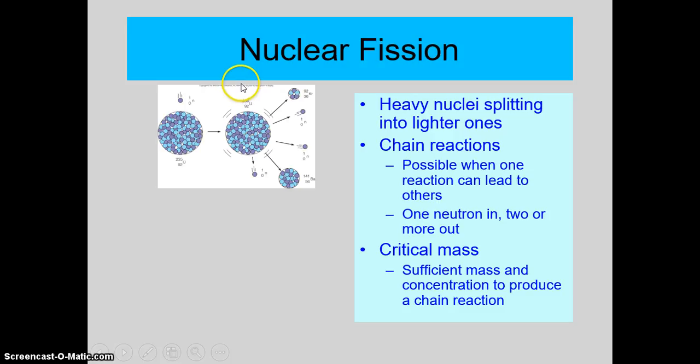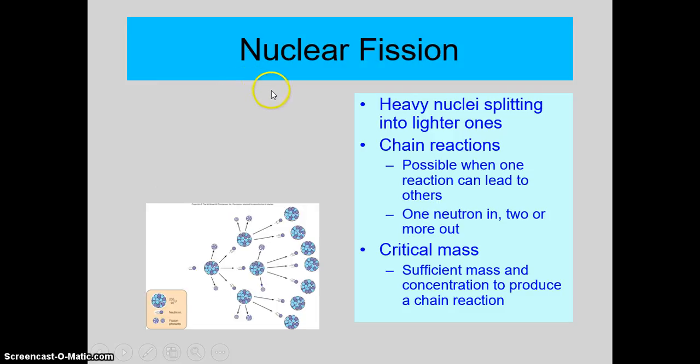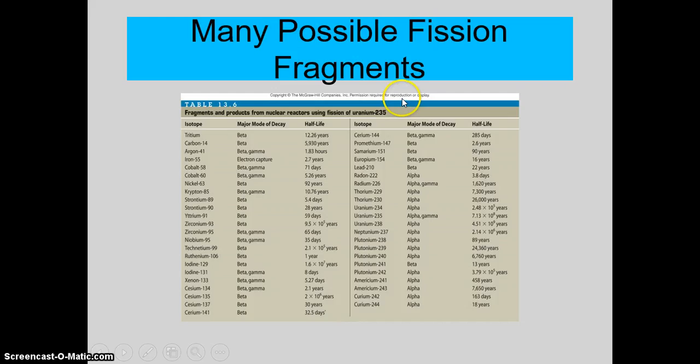So that is nuclear fission. It basically happens generally when heavier nuclei split into lighter ones. That's a simplified version of what happens, but it's pretty accurate. This is just some different things that happen when fission takes place.